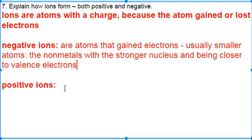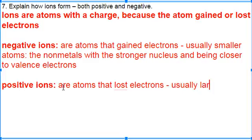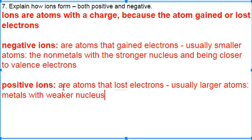And then the positive ions are just the opposite. So they are atoms that lost electrons. And I know that's weird because it's the opposite of how you do it in math. Losing is always negative. But this is usually your larger atoms. It's going to be the metals. It's going to be the weaker nucleus and further from the valence electrons.